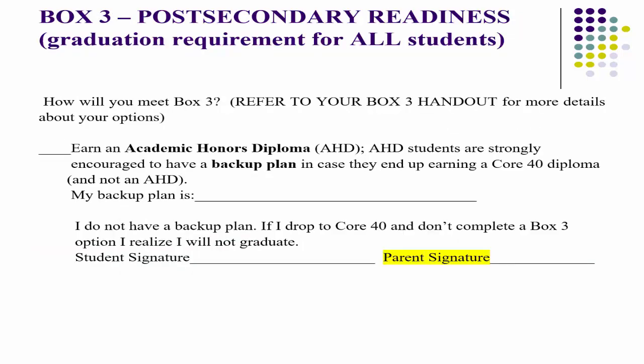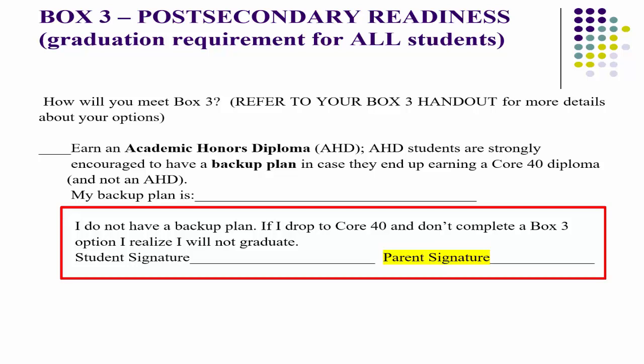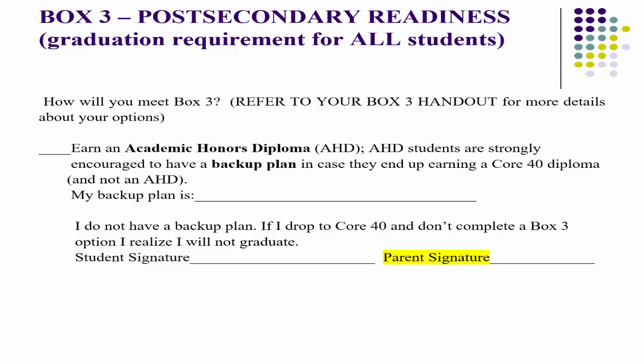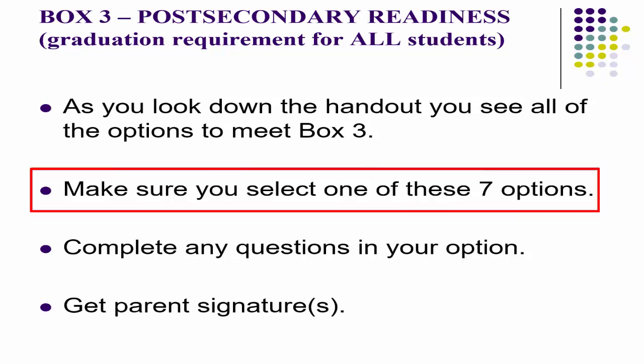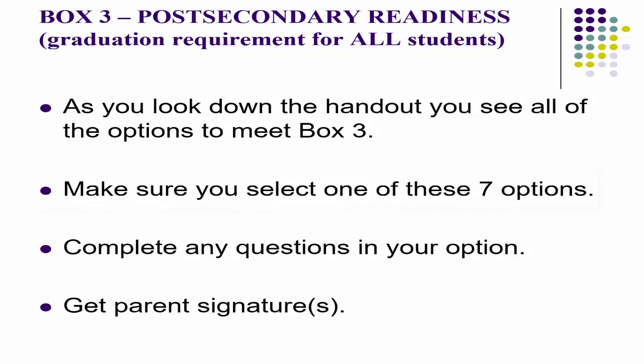Box 3 is post-secondary readiness — also a graduation requirement for everyone. Review the Box 3 handout for all seven options, as some have changed. Select one of the seven options and complete any required questions and get parent signatures. For example, if you're earning an Academic Honors diploma, check that off. We encourage a backup plan — if you choose not to have one, you and your parents will need to sign acknowledging the potential downfalls. Staple your Box 2 and Box 3 selection sheet together with your course selection sheet.